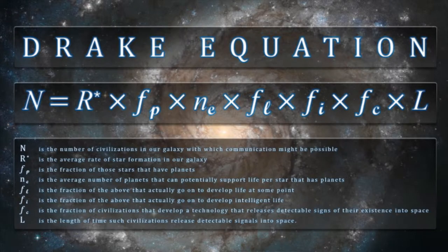The next to last fraction is the fraction of those intelligent species that develop the ability to communicate or travel in space. On the Earth, we have a handful at least of intelligent species, only one of which — us — have the ability to do that. But again, we have no idea what that fraction is in the general case.